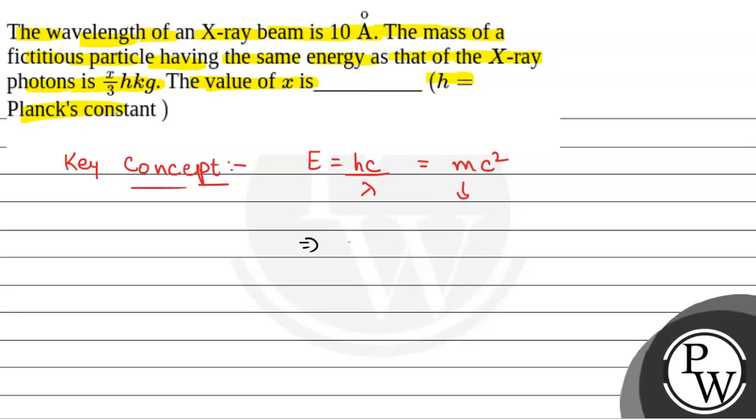So from here, we will have hc by lambda equals mc squared, or we have m equals h by c lambda.